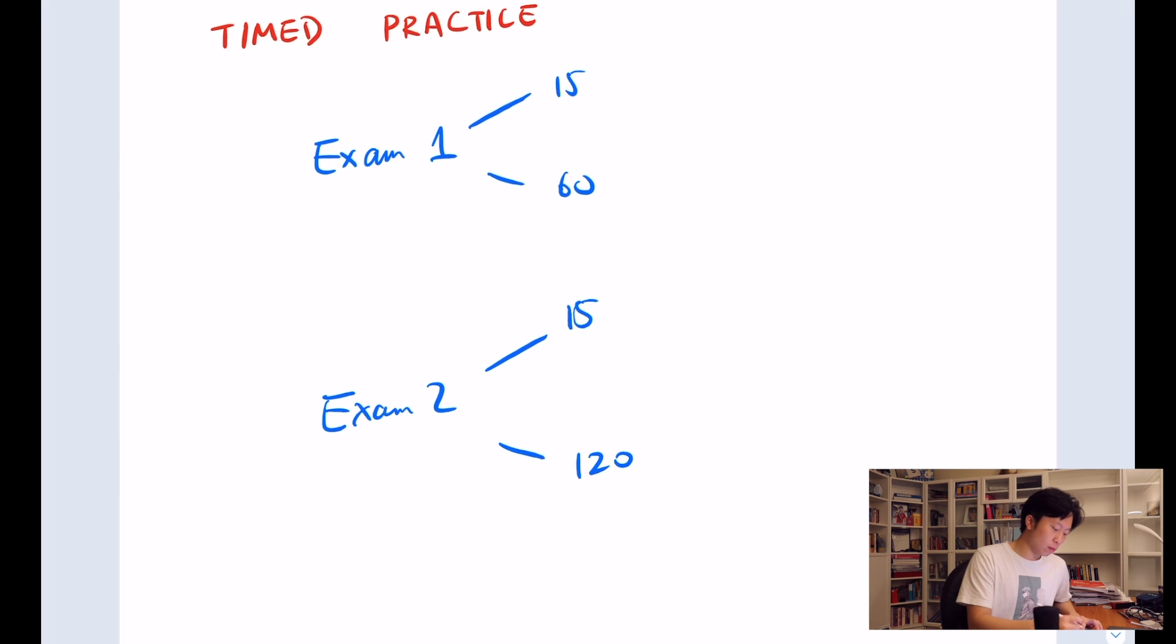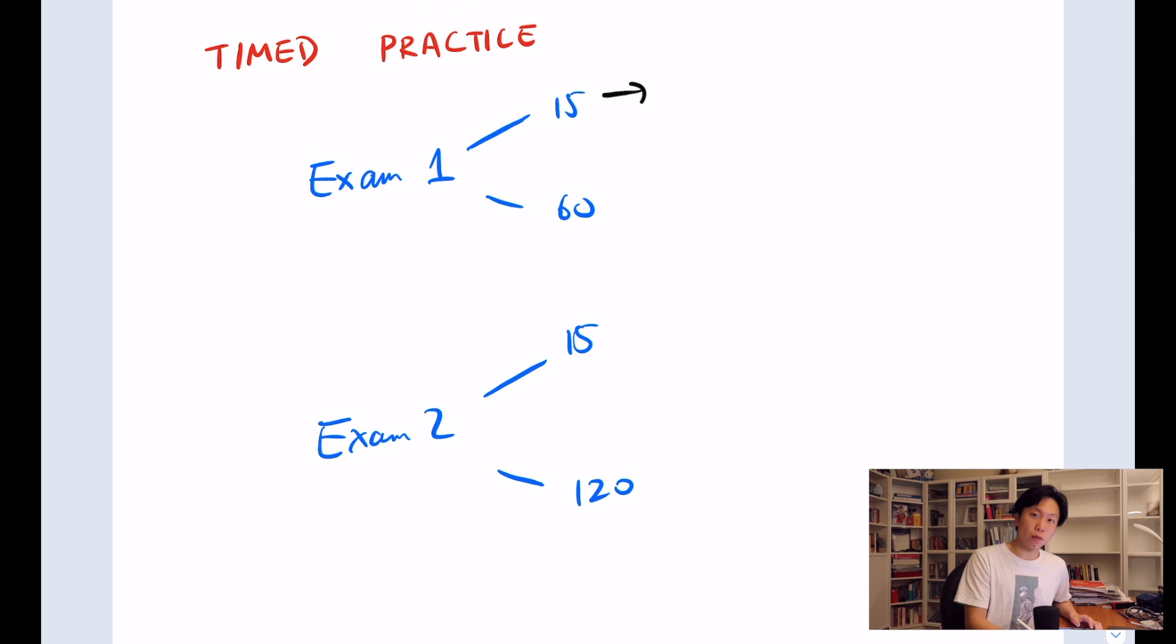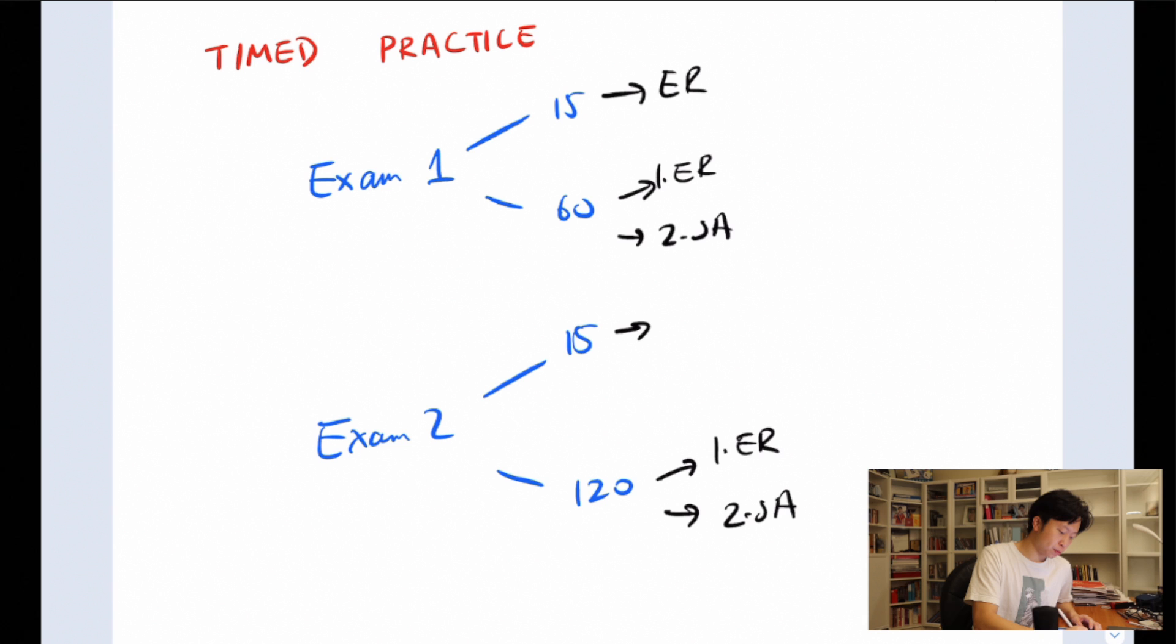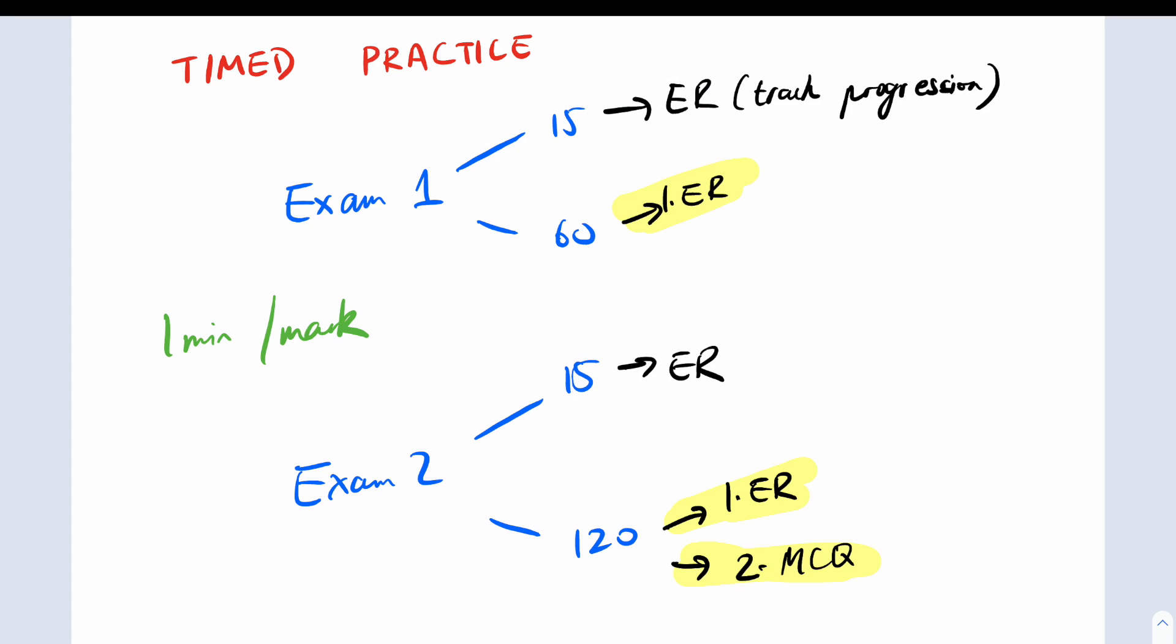The way I sat the exam was in reading time I would be looking at the extended response, because that was what I would start with. So I'd start with extended response first, then short answer. Same with exam two. Sorry for the mix up here - I think my mind was on the wrong lane. For exam one, ignore where I wrote short answer, because the whole of exam one is extended response. For exam two where I wrote short answer, I meant to say multiple choice questions.